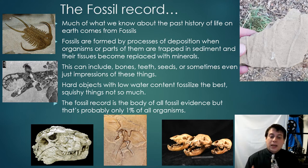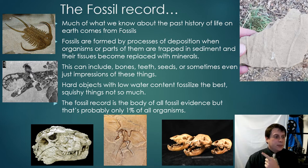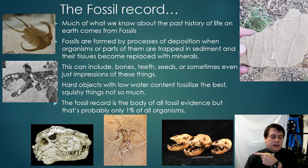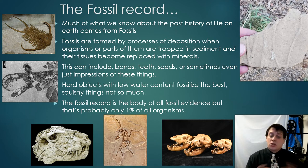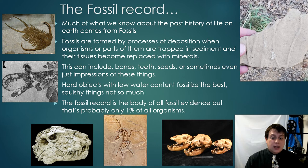Our record of life on Earth is the fossil record, but it's an incomplete record because things with low water content and hard objects fossilize best — things like bones and exoskeletons. Squishy things do not fossilize well, and most life on Earth is soft-bodied. So we only have a record of probably about 1% of all life that has ever existed. We can see a progression from trilobites to Anomalocaris to Dimetrodon to Archaeopteryx — the first bird, actually a dinosaur with feathers — to a series of bear skulls from just the past 10,000 years.